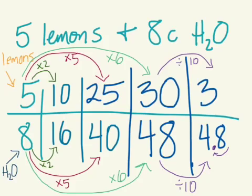So that is how a ratio table can be very, very useful — in recipes and even in using decimal numbers to figure out exactly what you need.